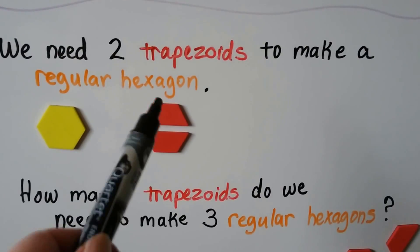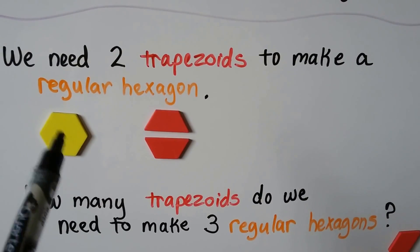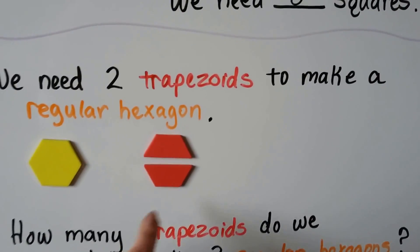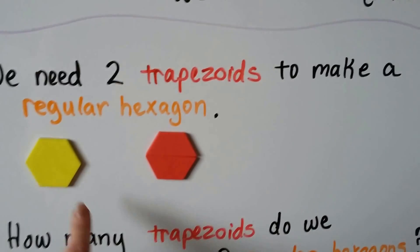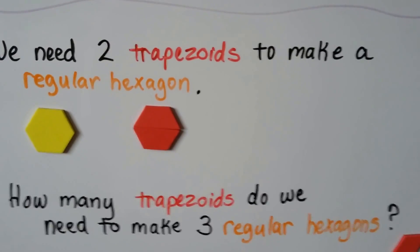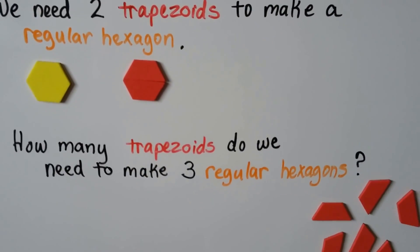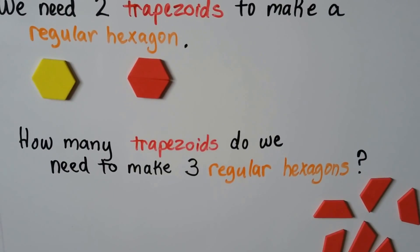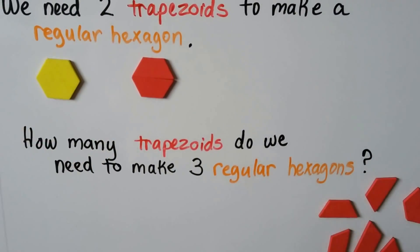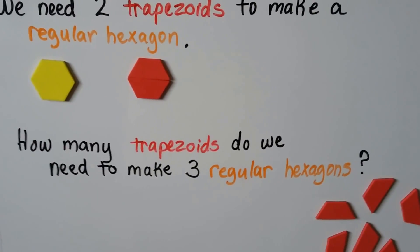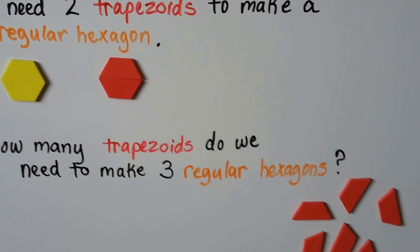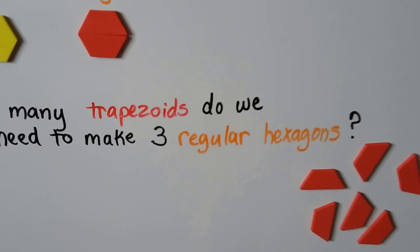We need two trapezoids to make a regular hexagon. When we squeeze it together like this, it makes a regular hexagon. So how many trapezoids do we need to make three regular hexagons? We want to make three of these. How many trapezoids do we need? Let's try building some.